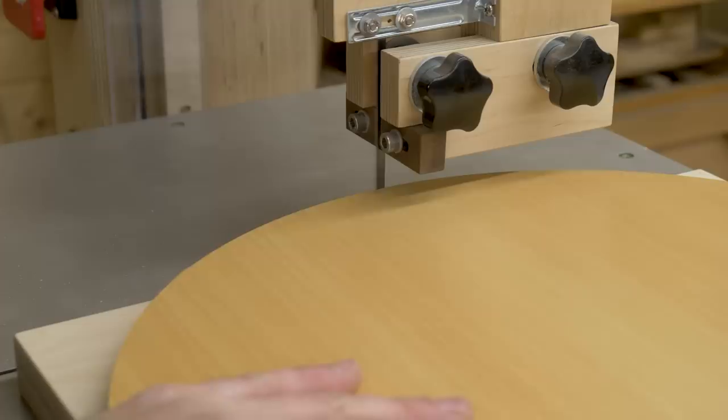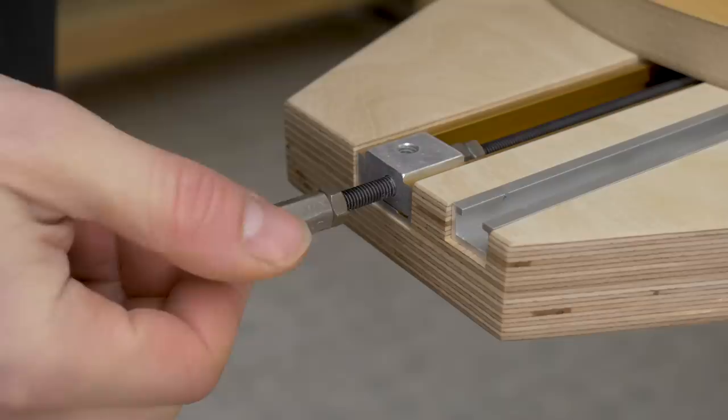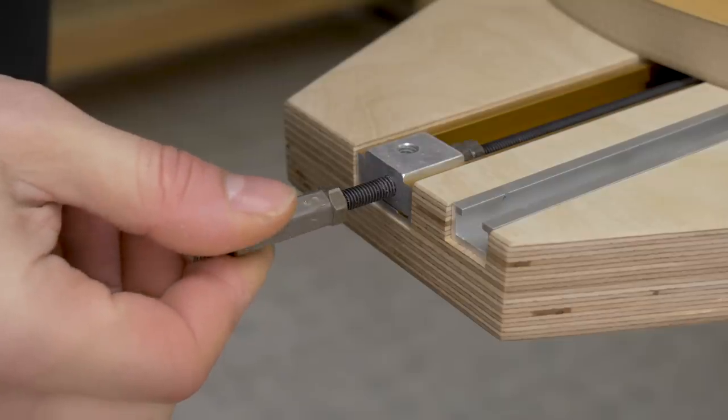While I turn the piece, I slowly move the slider against the blade, and it seems that this way I can also cut circles without any issues.